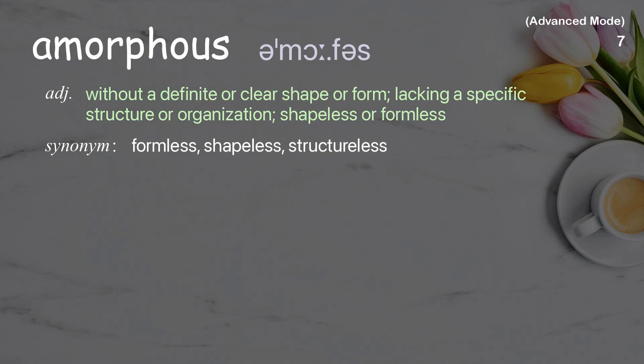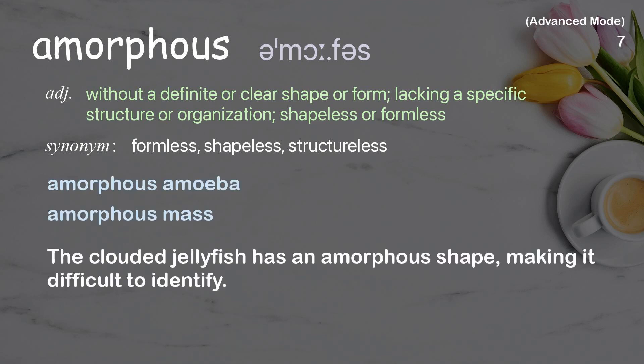Amorphous: without a definite or clear shape or form; lacking a specific structure or organization; shapeless or formless. Examples: amorphous amoeba, amorphous mass. The clouded jellyfish has an amorphous shape, making it difficult to identify.